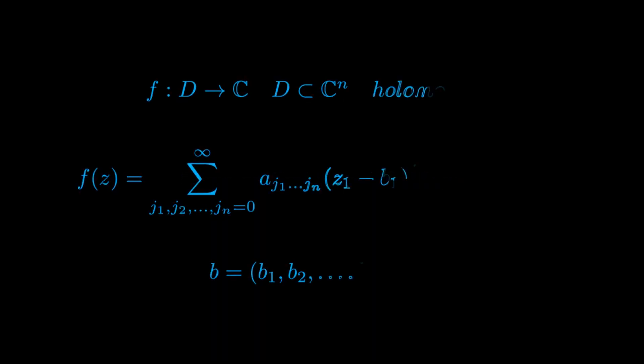Before we actually prove it, however, let us give some preliminary definitions. First of all, we are going to say that a function from an open set D of C^N to C is holomorphic if each point A of D has a polydisk, such that the function can be expanded in a poly-power series convergent in all points of said polydisk.